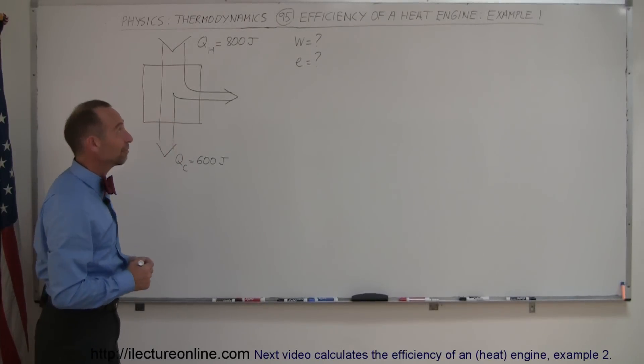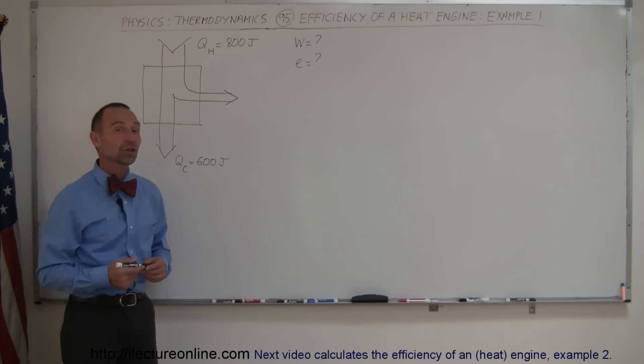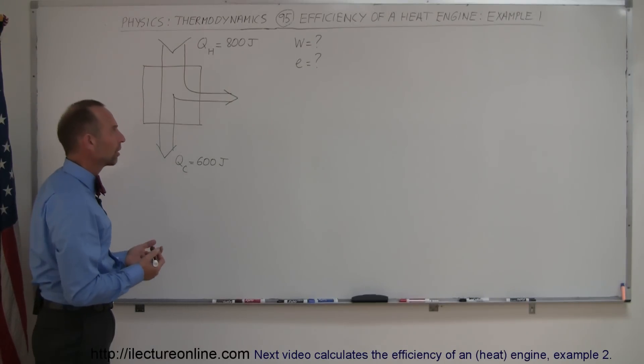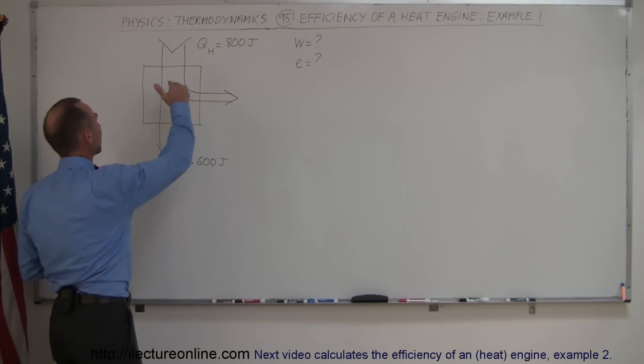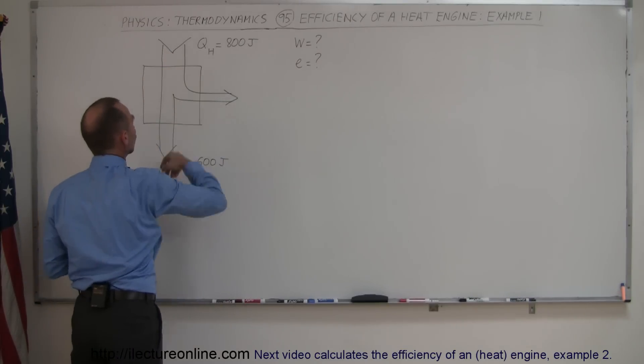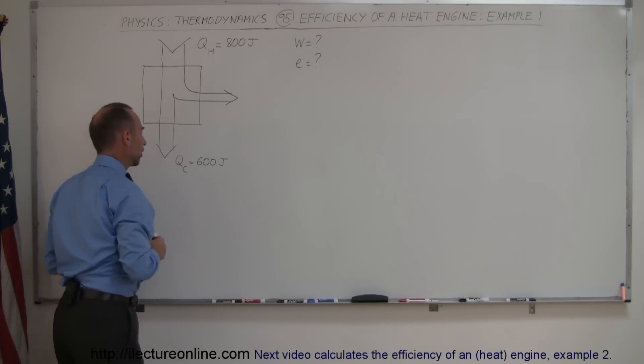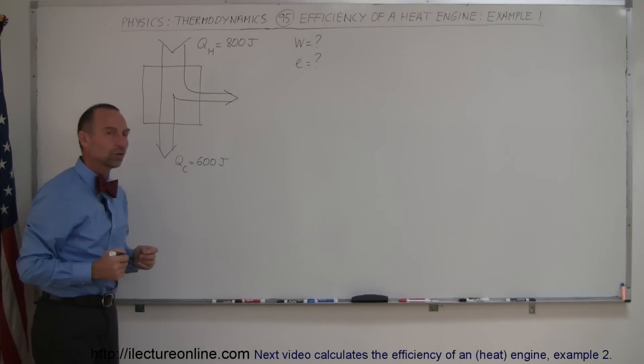And here's our first example of how to find the efficiency of a heat engine and also how much work is done. Here we have a schematic of a heat engine. We have an input of heat, let's say 800 joules. We have an exhaust that includes 600 joules of energy being expelled to the cold reservoir.